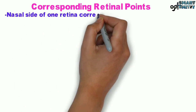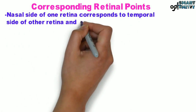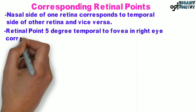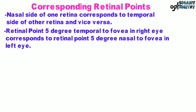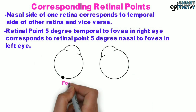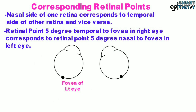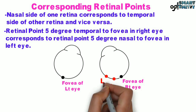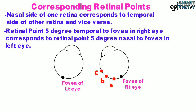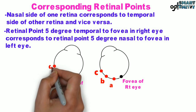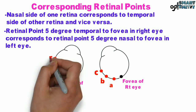Nasal side of one retina corresponds to the temporal side of the other retina and vice versa. A retinal point 5 degrees temporal to the fovea in the right eye corresponds to a retinal point 5 degrees nasal to the fovea in the left eye. In the diagram, the nasal retinal points A, B, and C in the right eye correspond to the temporal retinal points P, Q, and R in the left eye.